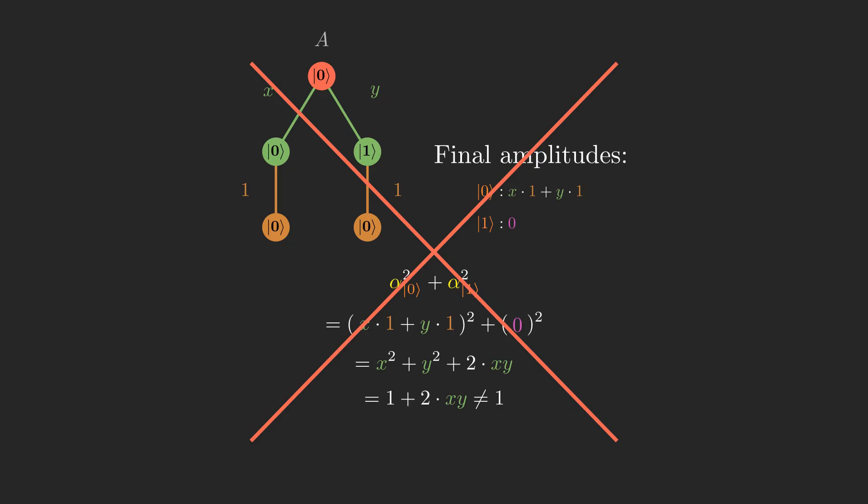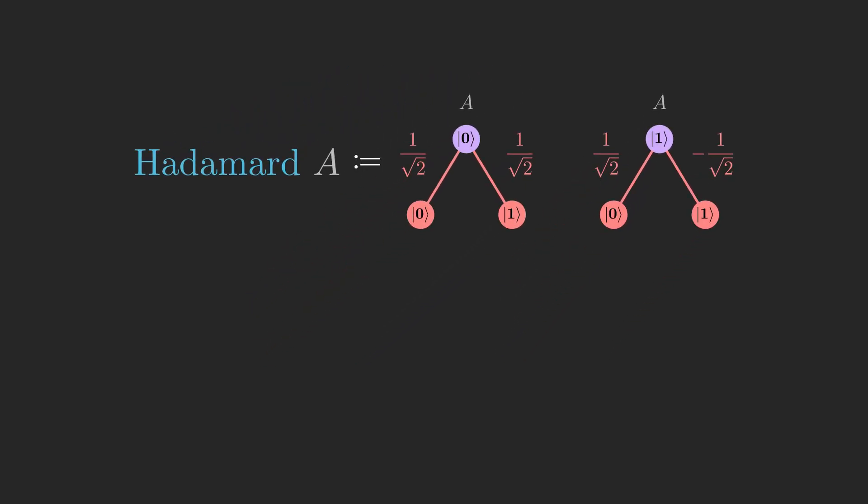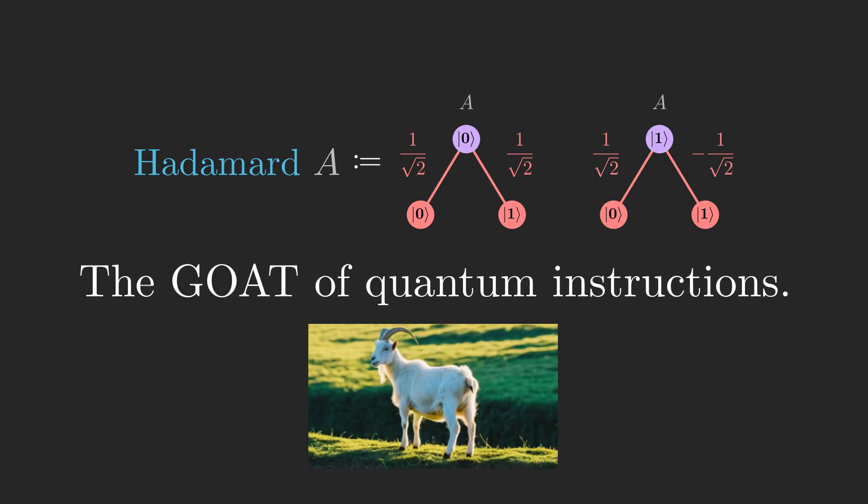Now that we've gotten a feel for how quantum instructions work, I'll introduce another instruction called Hadamard, which has the following amplitude trees. This instruction is named after the French mathematician Jacques Solomon Hadamard. It is central to many real quantum algorithms, and as you may recall from part 1, it's the instruction that will help us to solve mystery toggles. I'll leave it to you this time to check that Hadamard is a valid quantum instruction.